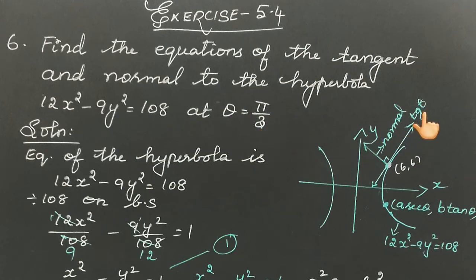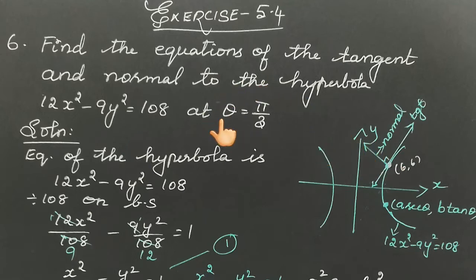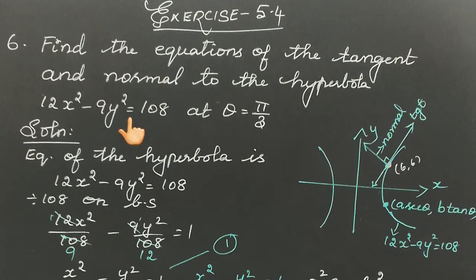At theta equal to pi by 3, let's draw the diagram with x-axis and y-axis and draw the hyperbola. Draw a tangent and also draw the normal — tangent and normal are always perpendicular to each other. We will find the equation of the tangent line and the equation of the normal. We will substitute x² as xx₁ and y² as yy₁ to find these equations.